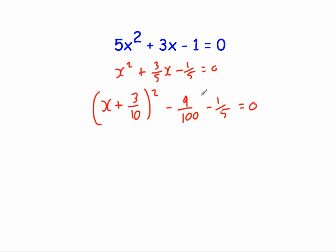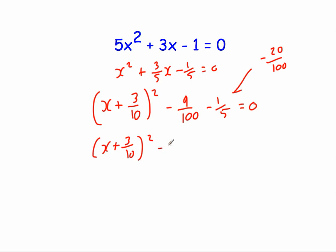Now we're going to simplify this part. We want a common denominator over 100, so minus 1 fifth becomes minus 20 over 100. That gives us x plus 3 over 10, close bracket squared, minus — if we have 9 one hundredths and take away 20 one hundredths — it's going to be minus 29 one hundredths, and that equals 0.